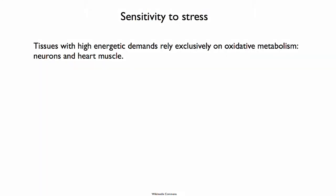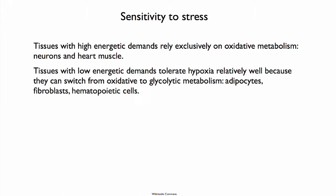This is related to how sensitive organs and tissues are to stress. A tissue with high energetic demand relies solely on oxidative metabolism — that would be neurons and heart muscle, which are always in oxidative mode. Tissues that have low energetic demand can tolerate a lack of oxygen fairly well; they can switch from oxidative to glycolytic metabolism. Fat cells, adipocytes, fibroblasts, and hematopoietic cells can all switch back and forth between these modes of metabolism.